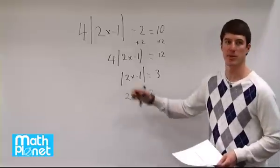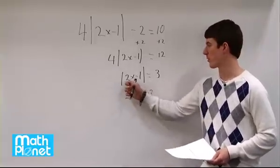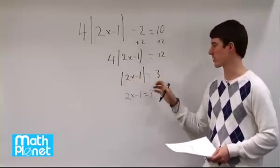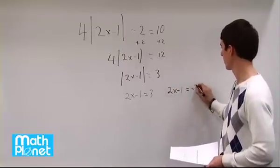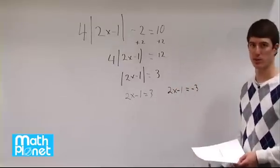But we also have the opposite of that because this is going to be true for positive or minus of this quantity, or we can just say the opposite of this side. So we can just say 2x minus 1 equals negative 3. So either one of these is true.